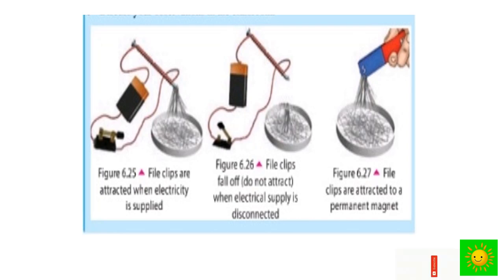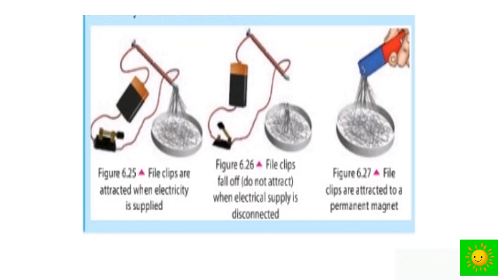In the first picture, you can see that the paper clips are attracted when electricity is supplied. In the second, the paper clips fall off and are not attracted when the electricity supply is disconnected. In the last picture, the paper clips are attracted to the permanent magnet.